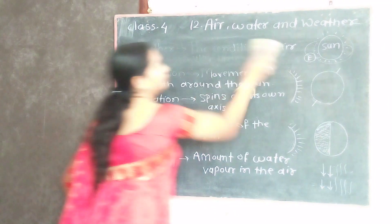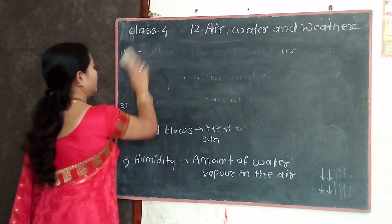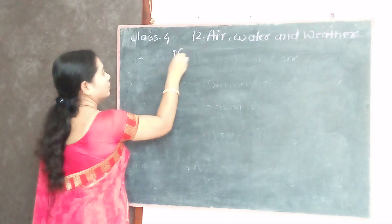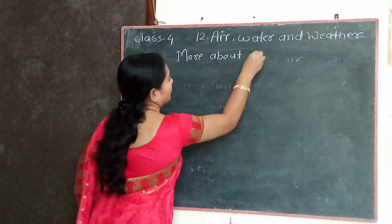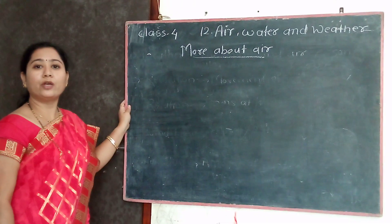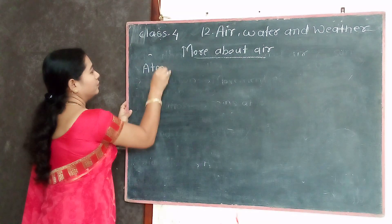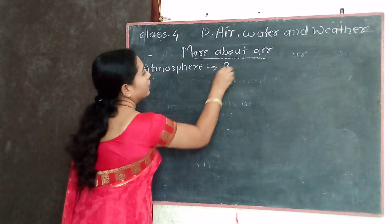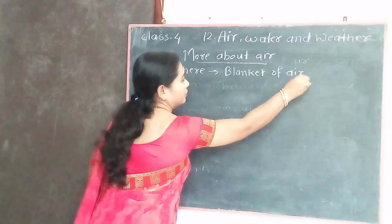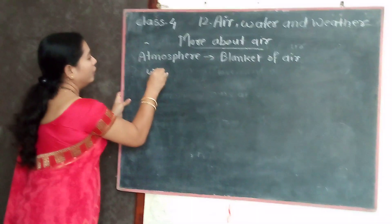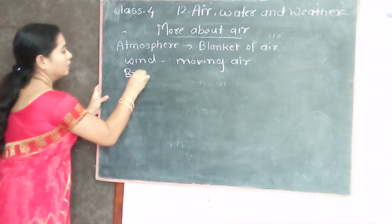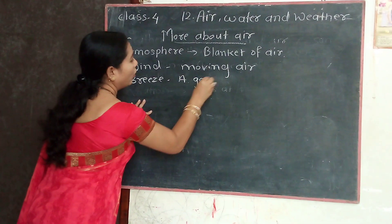Now let us see more about air. Air is all around us. Our earth is surrounded by a blanket of air, which is called the atmosphere. Moving air is called wind. A gentle wind is called a breeze.